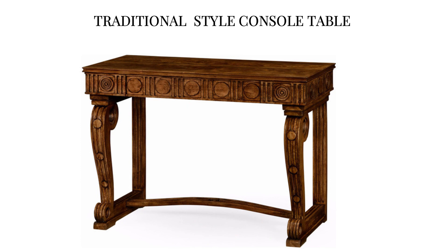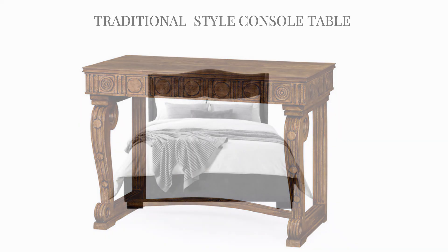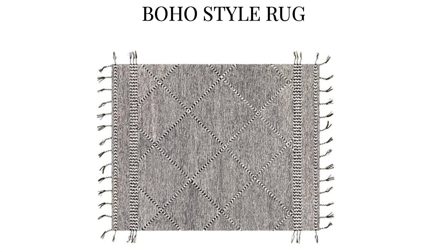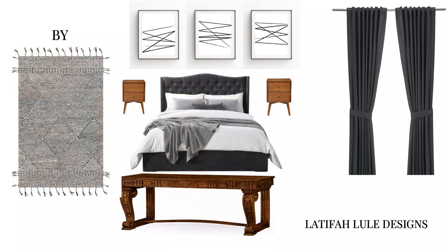For instance, you may have a console table that is traditional, a bed that is modern with a fabric headboard, or a rug that is boho style. Once you identify their styles and which group they belong to, it becomes easy to mix and match them to fit the style you want in that space. Don't be shy to play around with different designs, because interior design is all about creativity — bringing in different textures and styles that you like and combining them to give you a unique design that works perfectly for you.